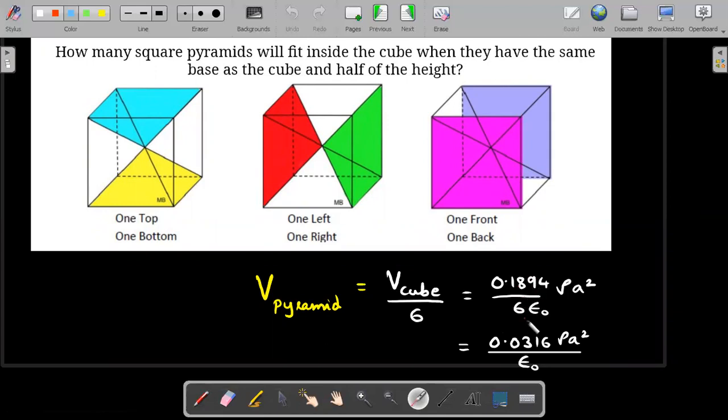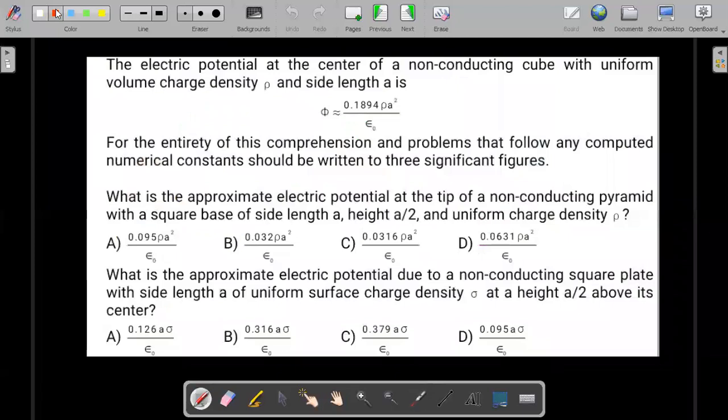So the first one is a pretty straightforward question. It would be whatever expression he gave divided by six. When you do this calculation and round off to three significant figures, 316 would be the best possible answer. So the answer for the first one would be option C.